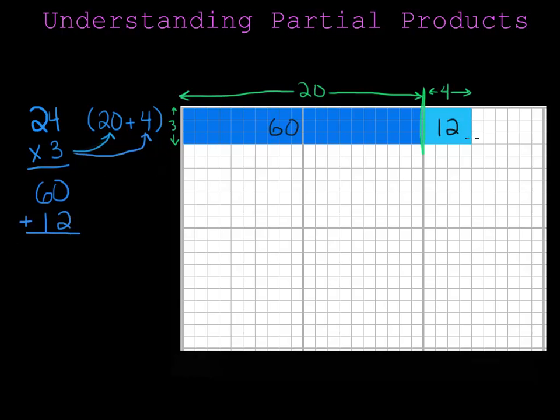To find my total area of the rectangle, I just add my two partial products back together. And 60 plus 12 is 72, so the area of the entire rectangle is 72 square units. Just like 24 times 3 is 72.